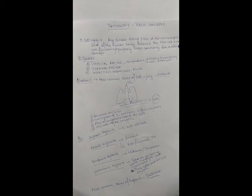So the basic concepts, when we study, the first thing which comes in our mind is cell injury. The cell injury is any disease taking place at the microscopic level of the human body because the tissues are not functioning properly, most commonly due to cell damage.